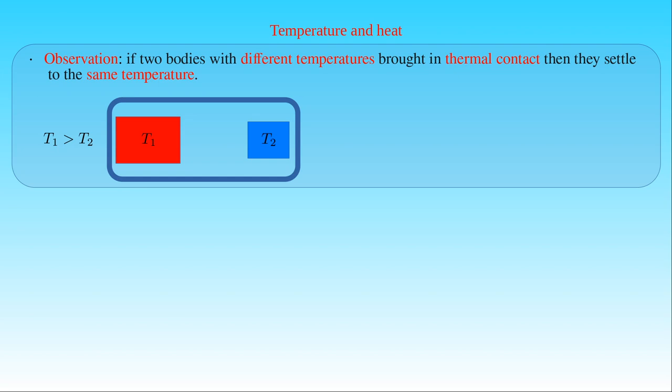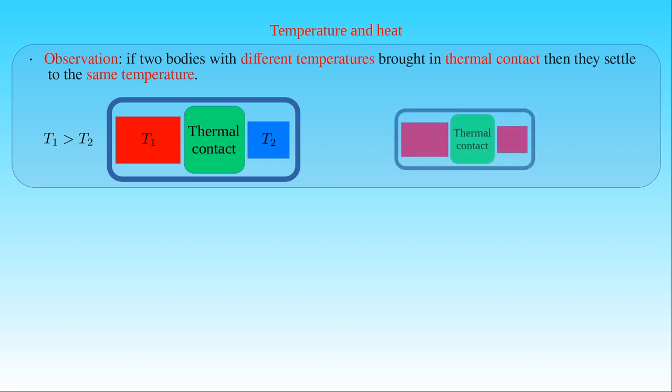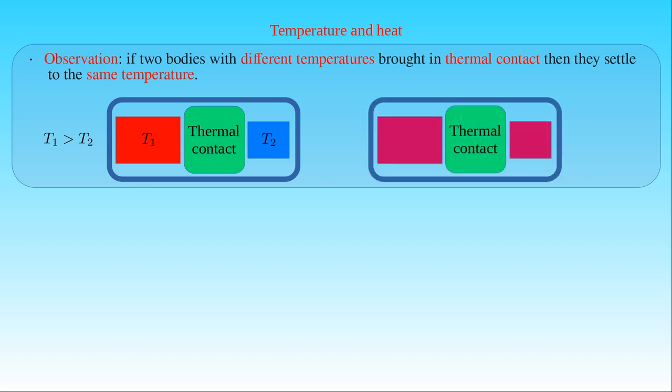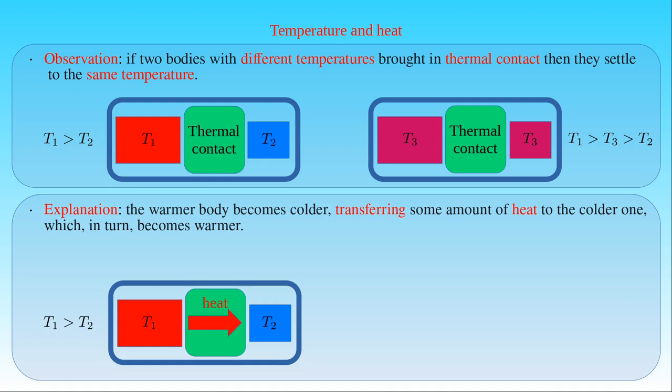If we bring the two bodies into thermal contact, represented by the green rectangle, and measure the temperatures of the bodies, then we will see the temperatures change in time. The temperature of the warm body decreases while the temperature of the cold one increases until they reach a common temperature T3. We explain the phenomenon of temperature equalization by applying the concept of heat, stating that the warmer body becomes colder, transferring some amount of heat to the colder one, which in turn becomes warmer.